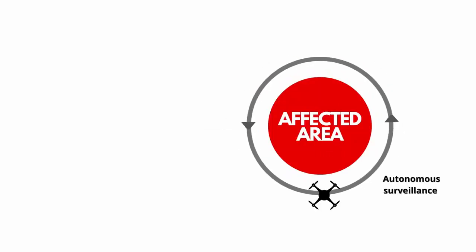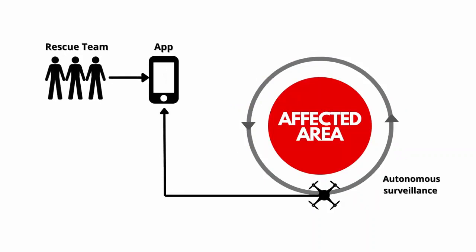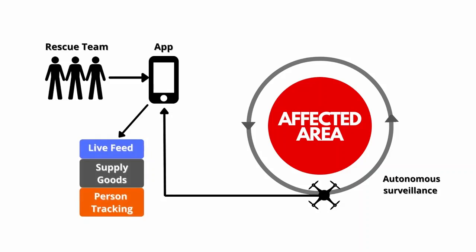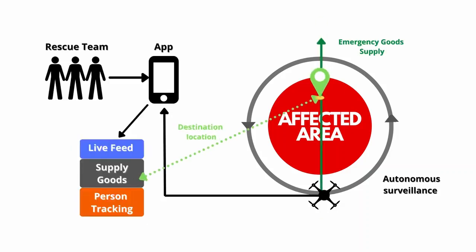Consider an affected area: the rescue team first marks the area to automate the drone for autonomous surveillance. The data collected during the surveillance and the output live feed is streamed in the mobile application, with which the rescue team is directed for the response mission. The location at which the emergency goods are to be supplied is marked with the help of Jarvis, where the drone automates to the destination and supplies the goods.